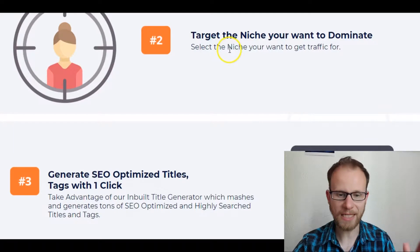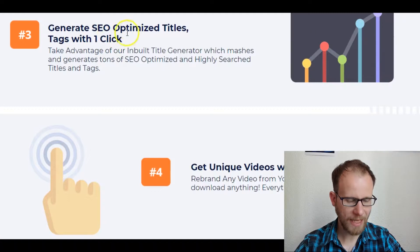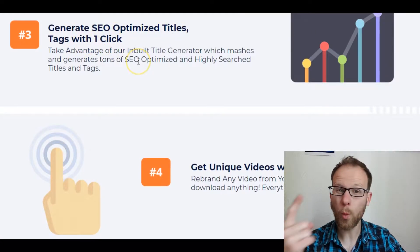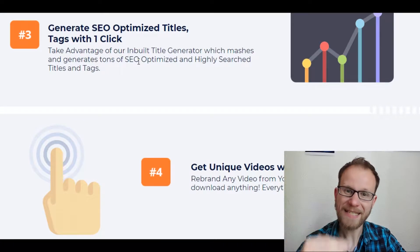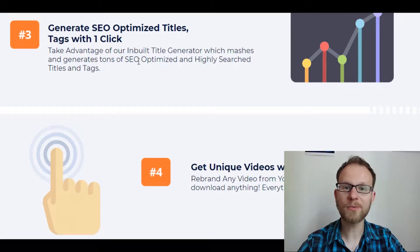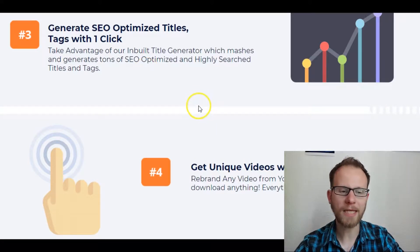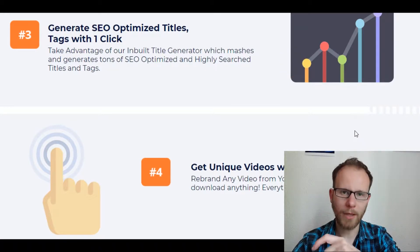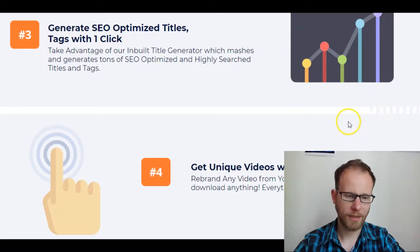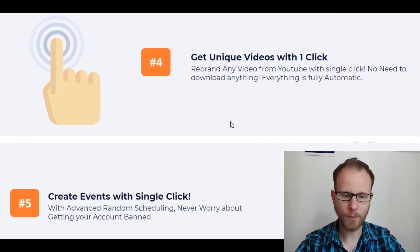You can select a niche where you want to get traffic. Then generate SEO optimized titles and tags with one click. It's really a system where you put in some small details and the system will come up with the best keywords, titles, and tags, so you don't have to put all the tags in one by one. You just click it once and boom, there it is.